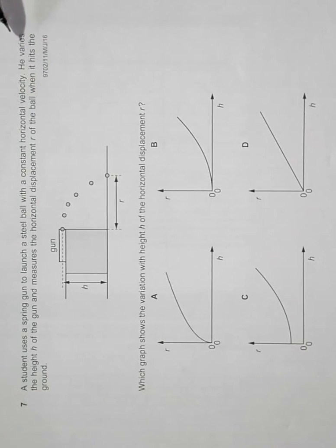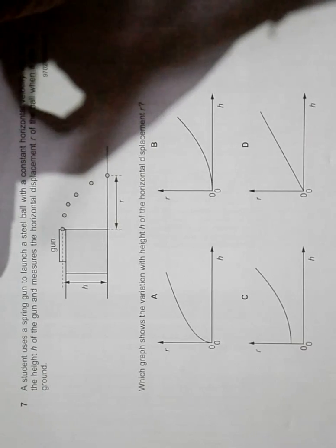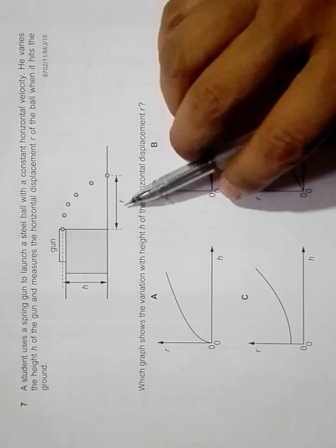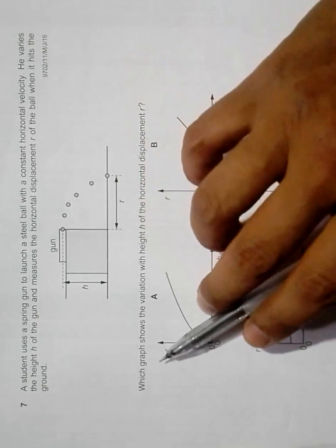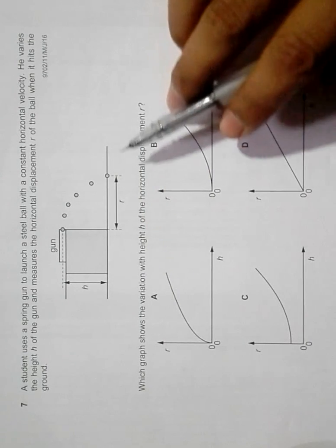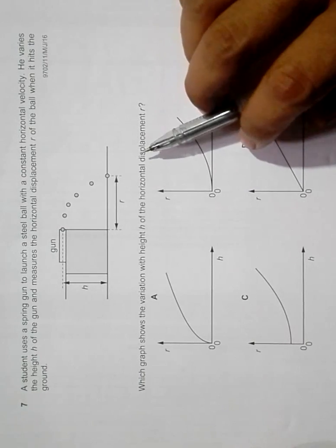He varies the height h of the gun and measures the horizontal displacement r of the ball when it hits the ground. Here we have to measure r when h is varied. Which graph shows the variation of r with respect to h? We have to calculate the variation of r with respect to h.